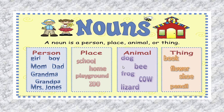Similarly, when we see a dog, bee, frog, cow, wizard — when we use these words, then only we understand which animal we are talking about. That means they are the names of animals also.